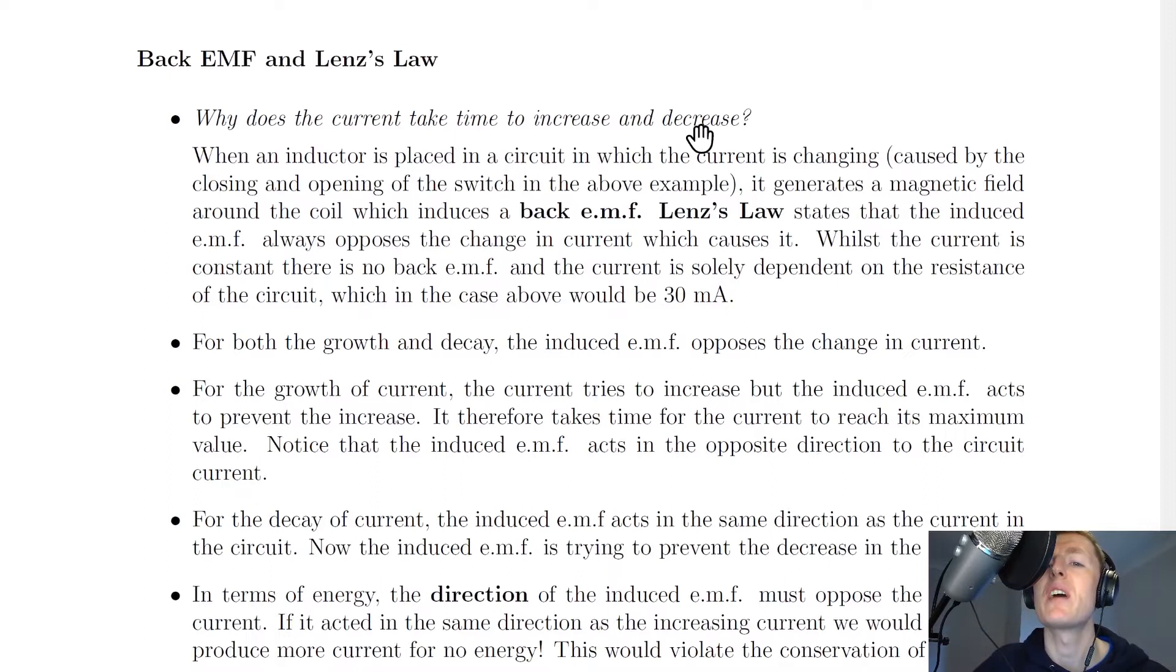So why does the current take time to increase and decrease? Well, when an inductor is placed in a circuit in which the current is changing, caused by the closing and opening of the switch in the above example, it generates a magnetic field around the coil which induces something called a back EMF, or in other words, a voltage that is acting backwards.